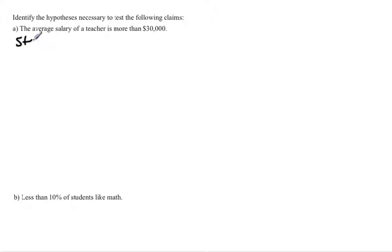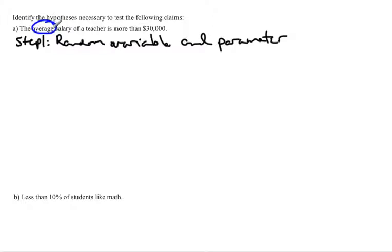The first step of every hypothesis test is to actually state what is the random variable and the parameter. In this case we see the word average. When you see the word average, that should make you think about the word mean. Average mean is a certain type of average. So in this case we are going to assume that we have a normal distribution. So average would be mean, median, or mode. They all three would be the same. So we're just going to use the mean.